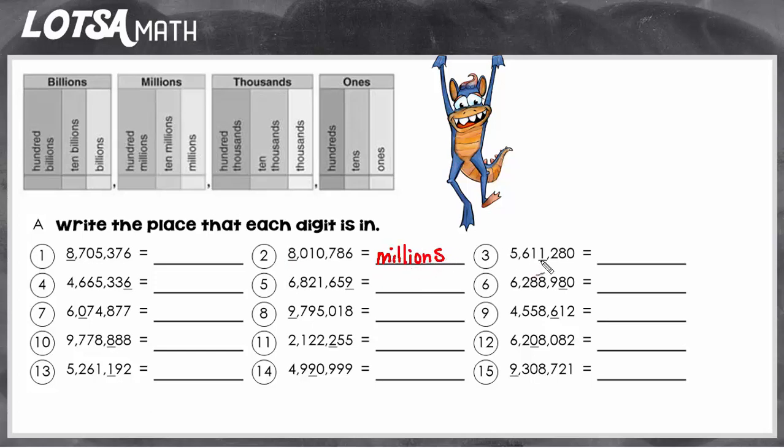Okay, let's do number 3. The underlined digit is right here in this place. It's the 4th column. So the 4th column is the thousands place. So the 1 is in the thousands place. So you would write thousands here.